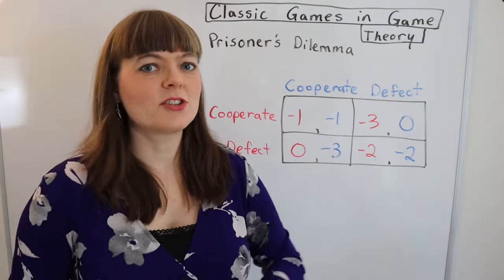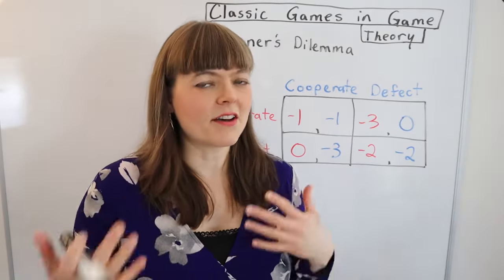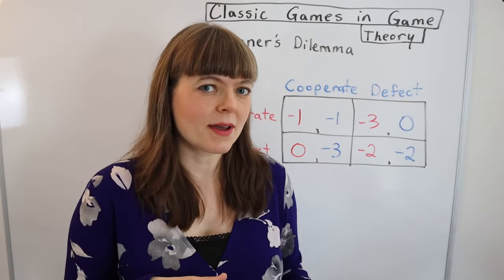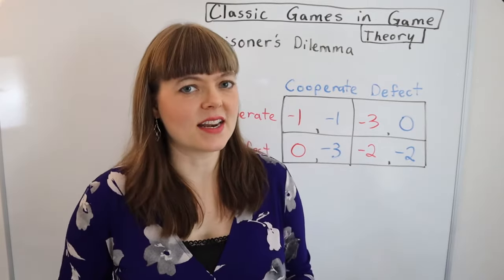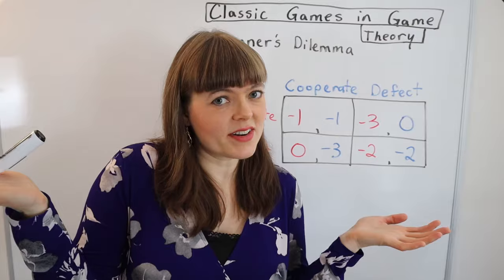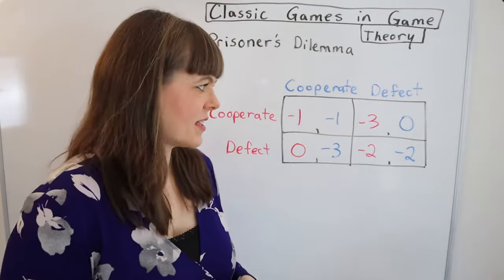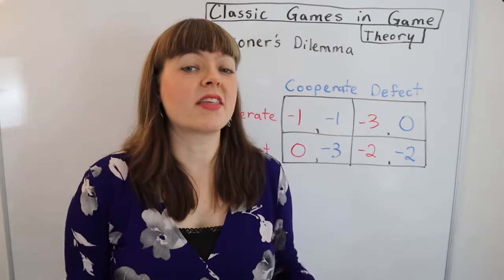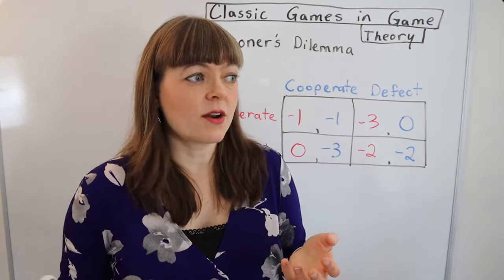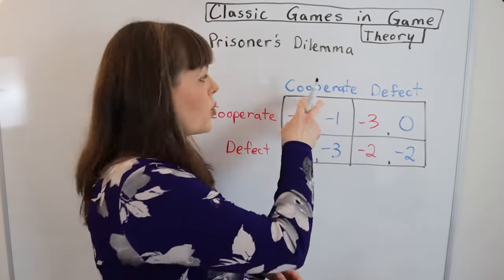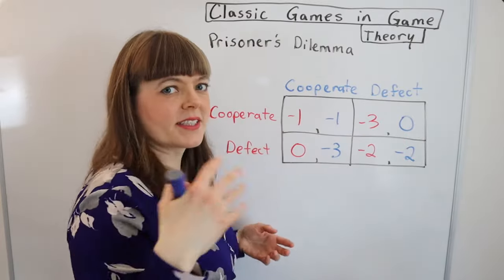So the classic setup is you have two prisoners who have been caught for a crime and the police have enough evidence to convict them of a minor crime, but the police are pretty sure that these two people committed a major crime, and they did, but they don't have evidence of that unless one of them will rat on the other. So they set up this incentive system where the two prisoners are in separate rooms and they tell both prisoners, if you give us evidence against your friend, then we will give you a lighter charge. So cooperating is going to be not snitching on your friend and defecting is going to be snitching on your friend.